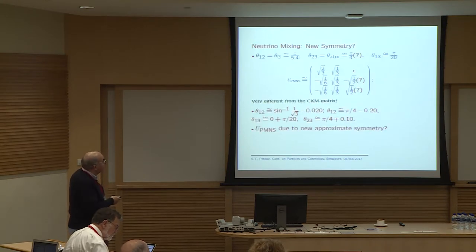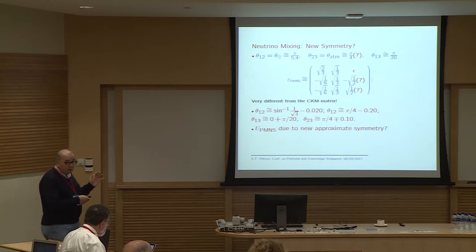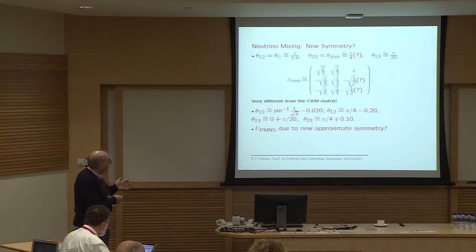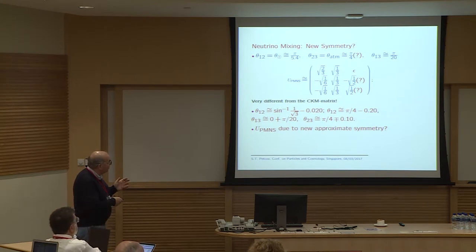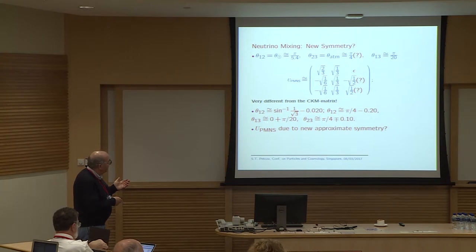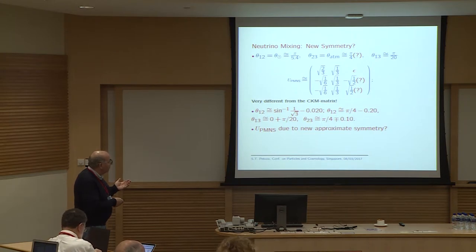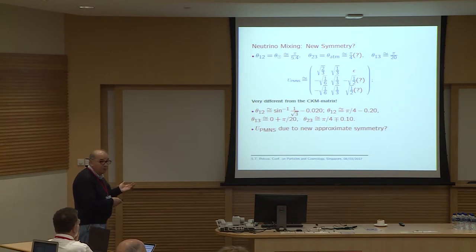Why symmetries? If you look at the values of the mixing angles, you realize that the values determined from data are very close to values obtainable from symmetry considerations. For example, θ₁₂ deviates from the tri-bimaximal mixing value by only 0.02, deviates from π/4 by a quantity of order the Cabibbo angle, and θ₁₃ deviates from 0 by π/20, while θ₂₃ is of order π/4 ± 0.1. All these corrections are sub-leading perturbative corrections.